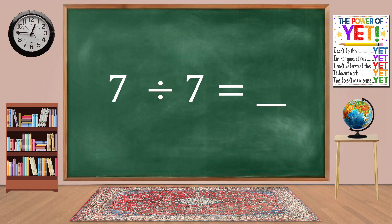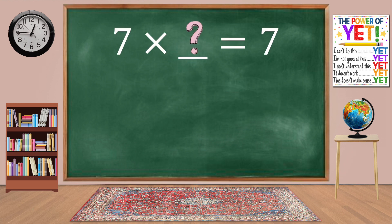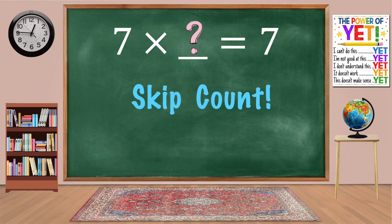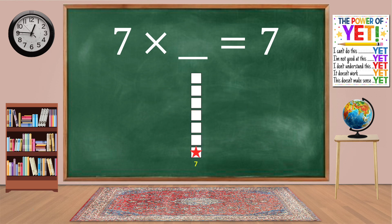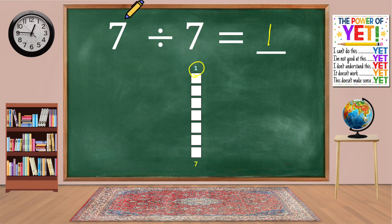Seven divided by seven equals blank. Our related fact is seven times what equals seven? We can skip count: 7. We have one column. Seven times one equals seven. Seven divided by seven equals one.